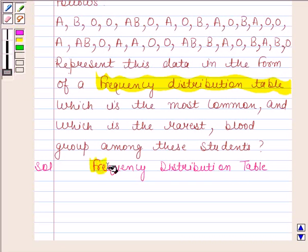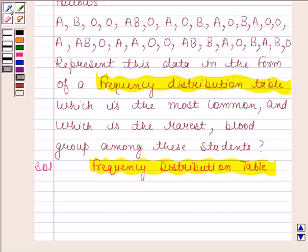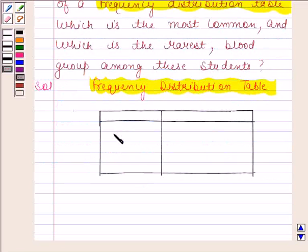Let's now make a frequency distribution table of the given data. We have made this table with two columns: one for the blood groups and one for the number of students. Now we will write all the blood groups A, B, O, AB under the column blood group in four respective rows.